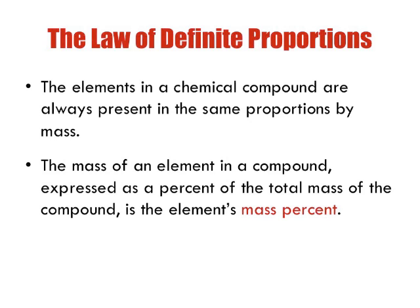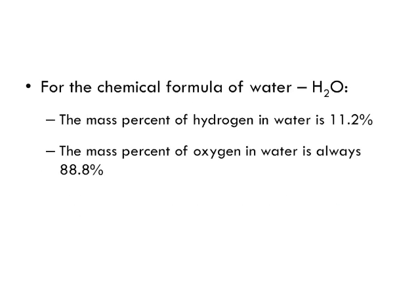For the chemical formula of water, H2O, the mass percent of hydrogen is 11.2 percent and the mass percent of oxygen in water is always 88.8 percent. Here's a calculation already given to you. When going through the steps, we found that 88.8 percent is comprised of oxygen and 11.2 percent is comprised of hydrogen in a molecule of water.